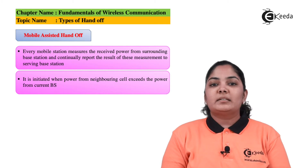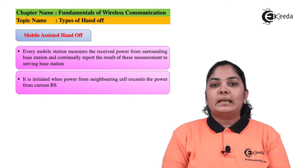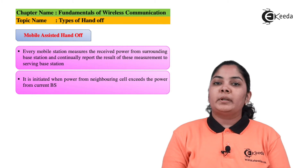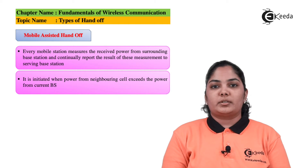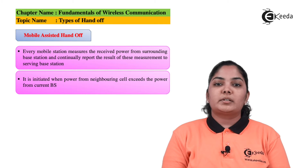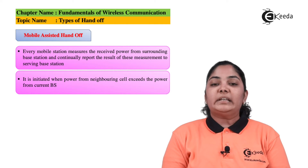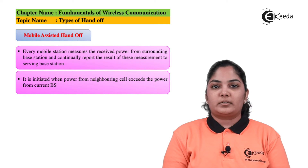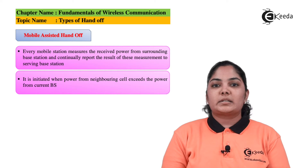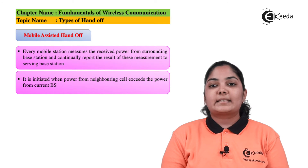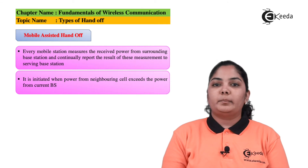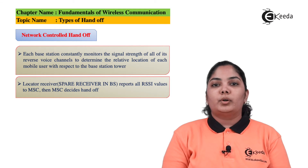The next handoff type is mobile assisted handoff. Here, the mobile stations themselves check the power levels from neighboring base stations and report those levels back to the base stations. Once it is identified that the power levels are constantly decreasing, the mobile station itself initiates the handoff request. This handoff request is initiated when the power levels from a nearby base station exceed the power levels from the current base station.